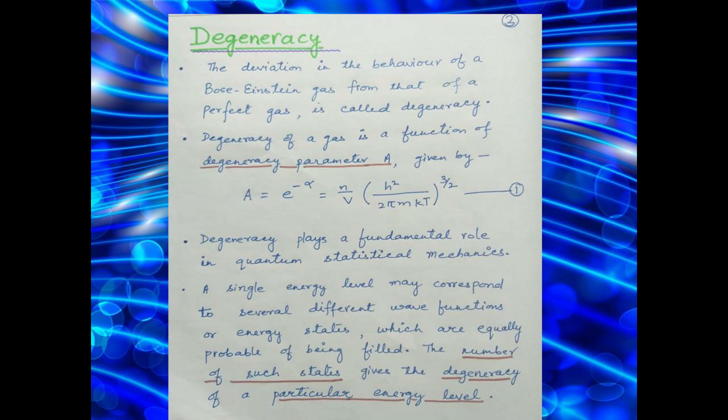Another important feature here is degeneracy. The deviation in the behavior of a Bose-Einstein gas from that of a perfect gas is called degeneracy, and the degeneracy of a gas is a function of degeneracy parameter A, which is given by equation 1 shown here. Degeneracy plays a fundamental role in quantum statistical mechanics. A single energy level may correspond to several different wave functions or energy states which are equally probable of being filled. The number of such states gives the degeneracy of a particular energy level.